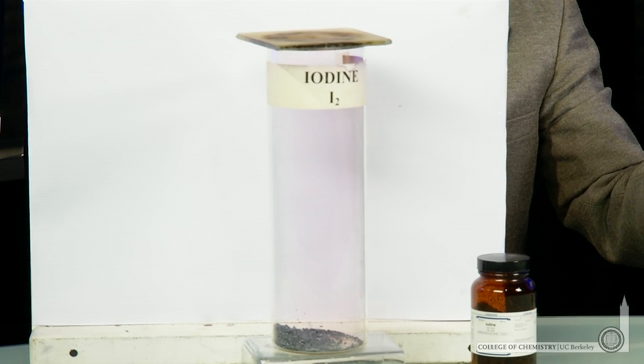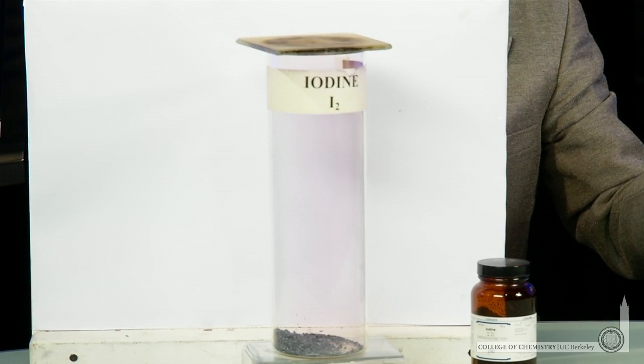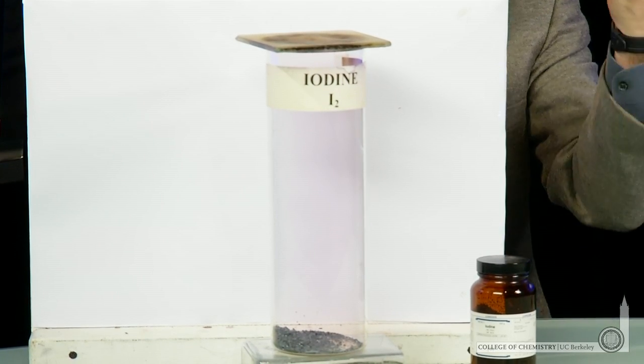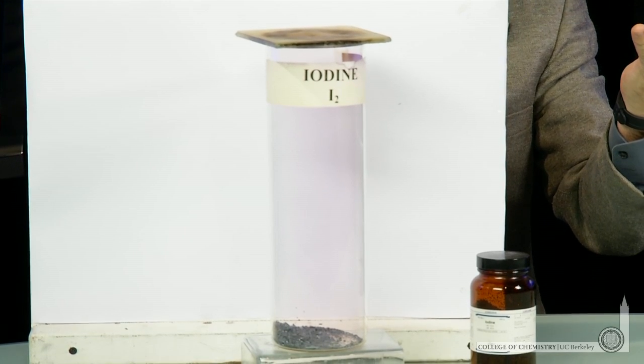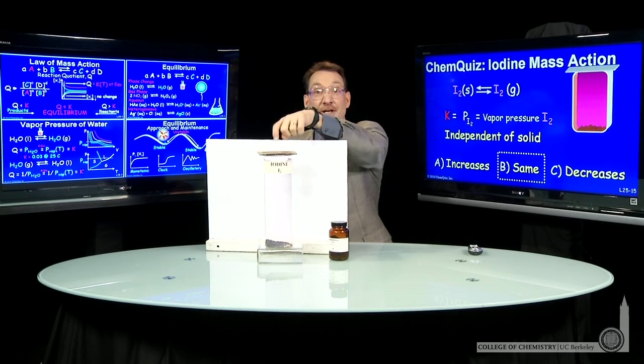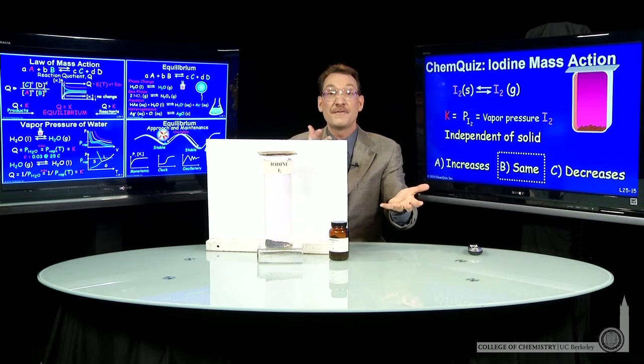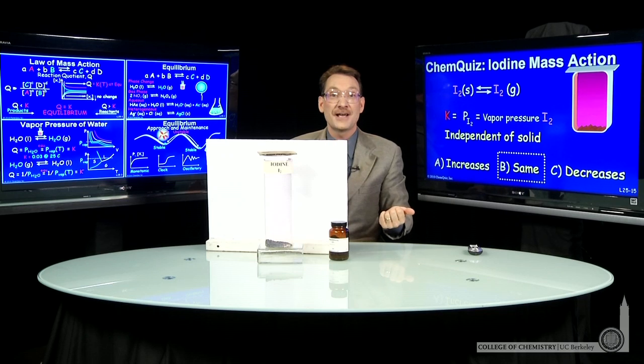Now, that might seem counterintuitive at first. You put more solid. How come that doesn't produce more vapor? Well, I did put more solid. And initially, some more vapor will go into the gas atmosphere here. But at the same time, I've added that more solid. That gives more surface area for the vapor that's there to condense back on the solid.